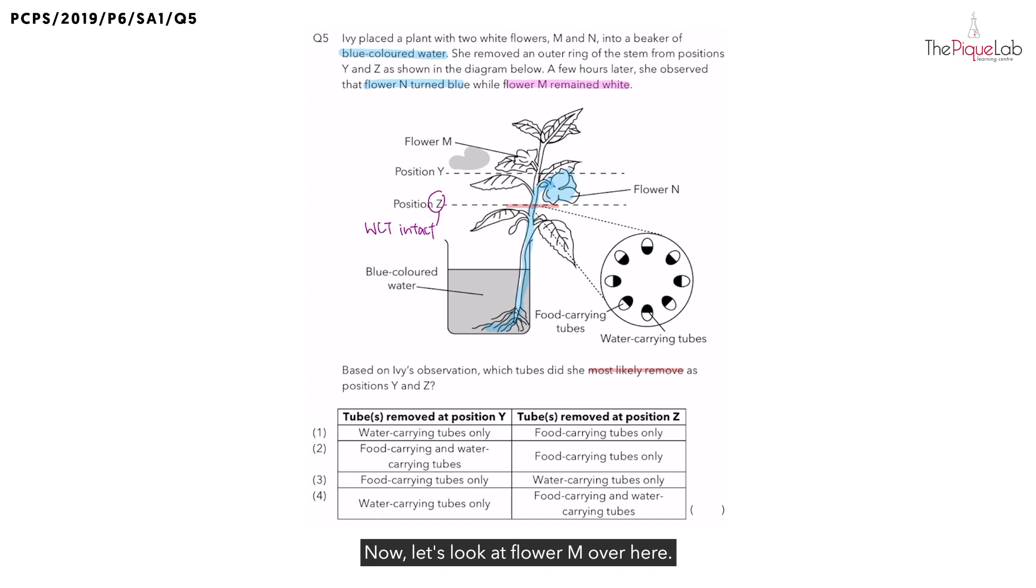Now, let's look at flower M over here. They told us that the flower remained white. Hence, at position Y, was the water carrying tube in the stem still intact? No, as the blue water was not transported past part Y to flower M, the water carrying tube was removed at position Y.